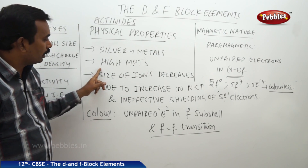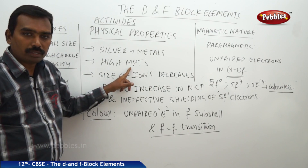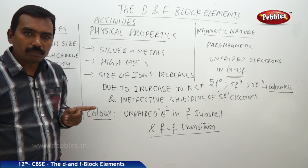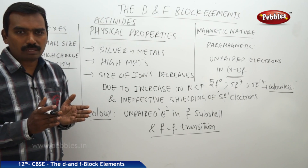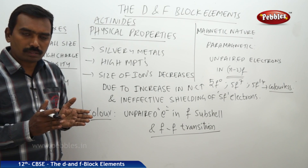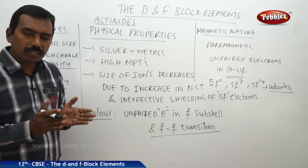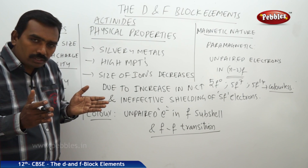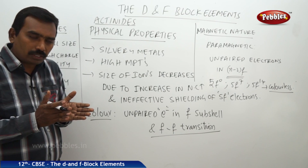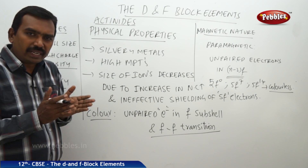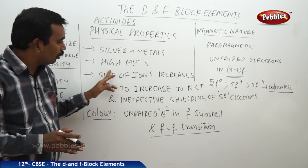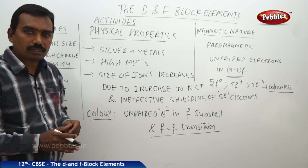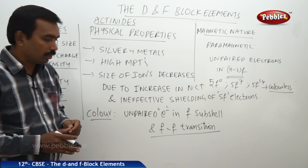Actinides also have high melting points. Melting point depends on the close packing of atoms or particles. In actinides, the particles are closely packed, so there are more attractions between the particles, giving them high melting points.